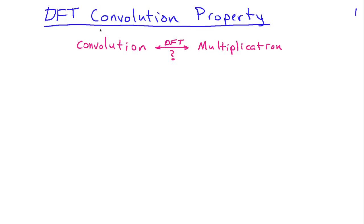The Fourier transform and the discrete-time Fourier transform have a very powerful property when it comes to convolution. We've used that repeatedly where we have a convolution in the time domain and can convert that to multiplication of the transforms in the frequency domain. The question here is whether the DFT shares that same property. We're going to approach it from the standpoint of multiplying the DFT coefficients and then exploring what happens to the signal in the time domain.